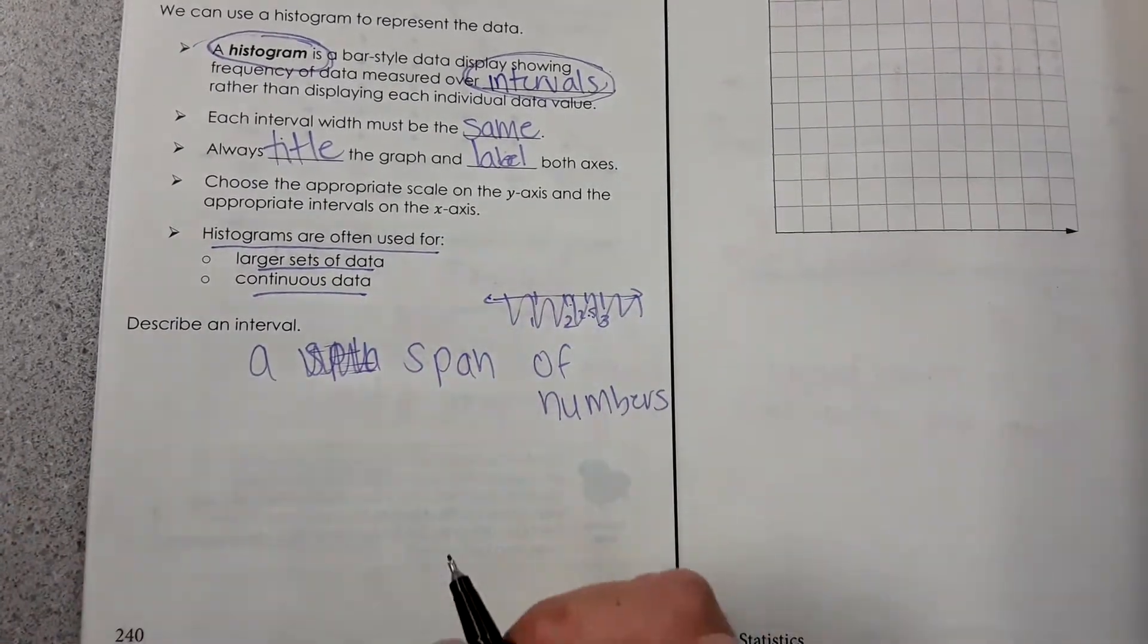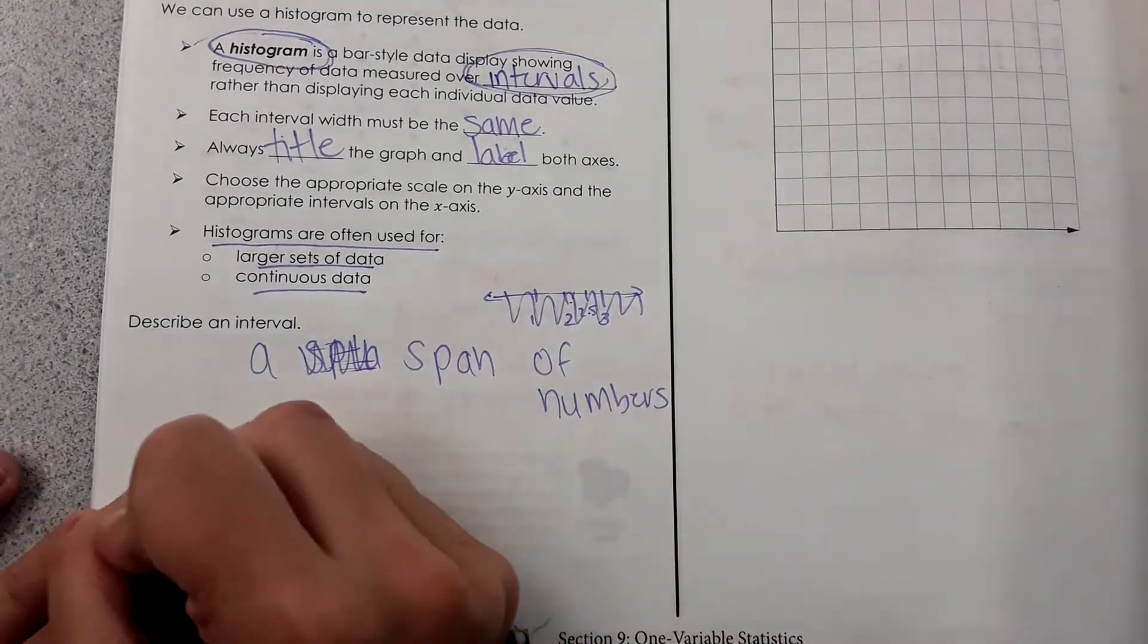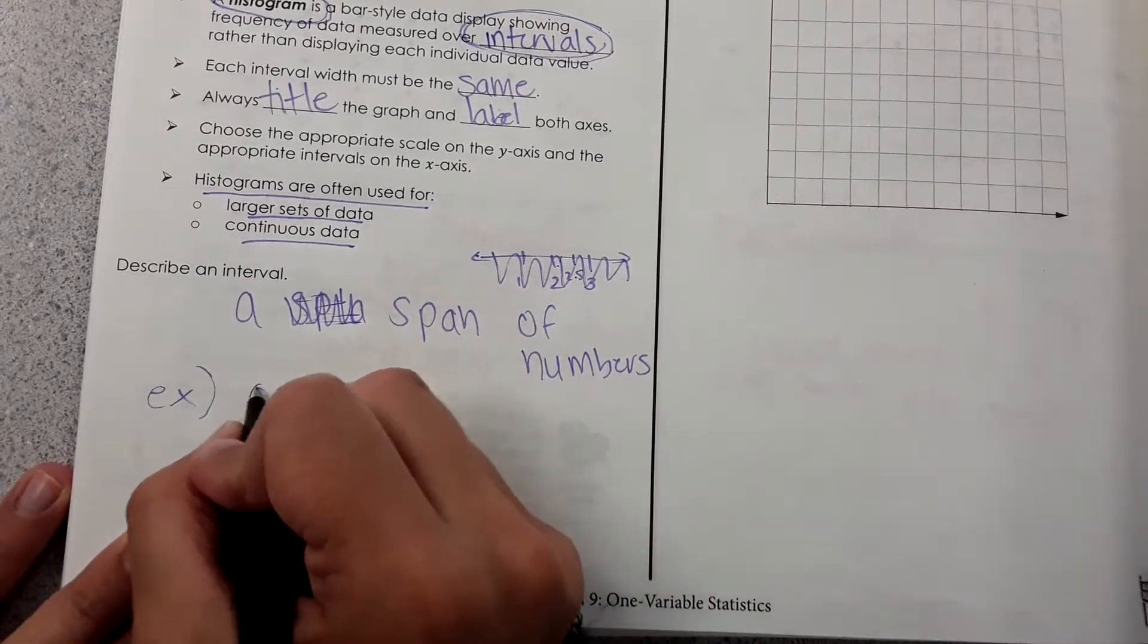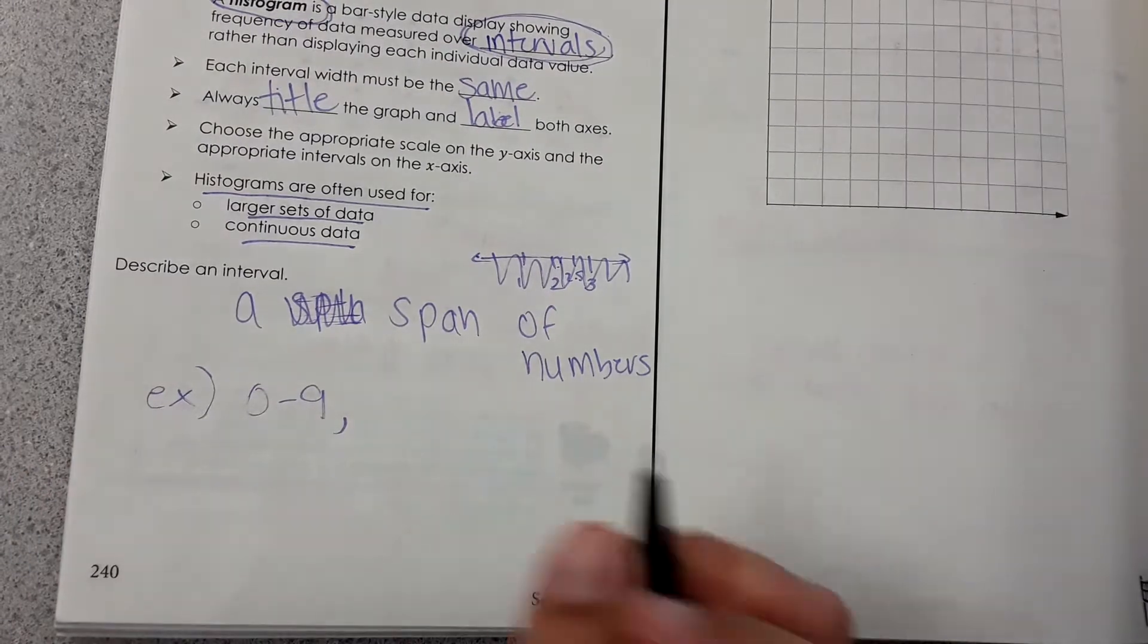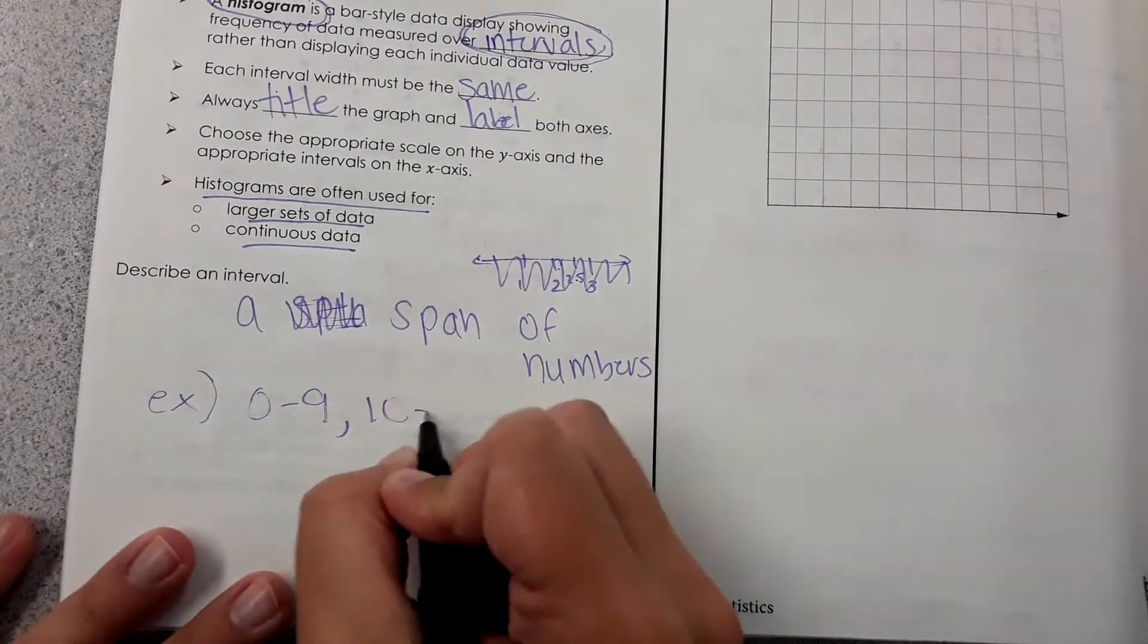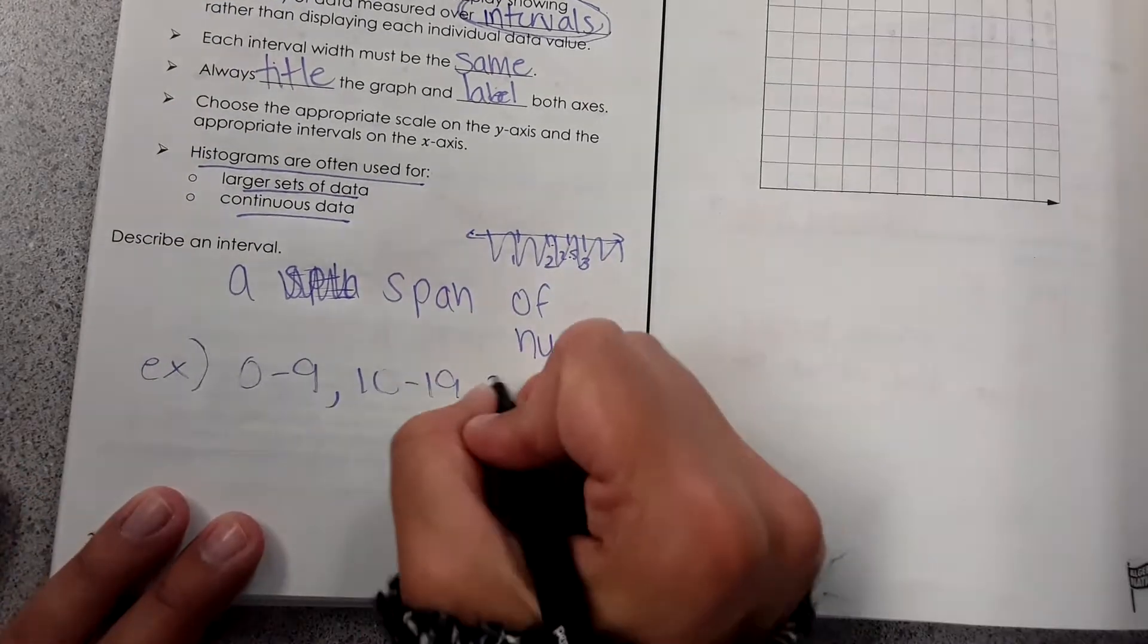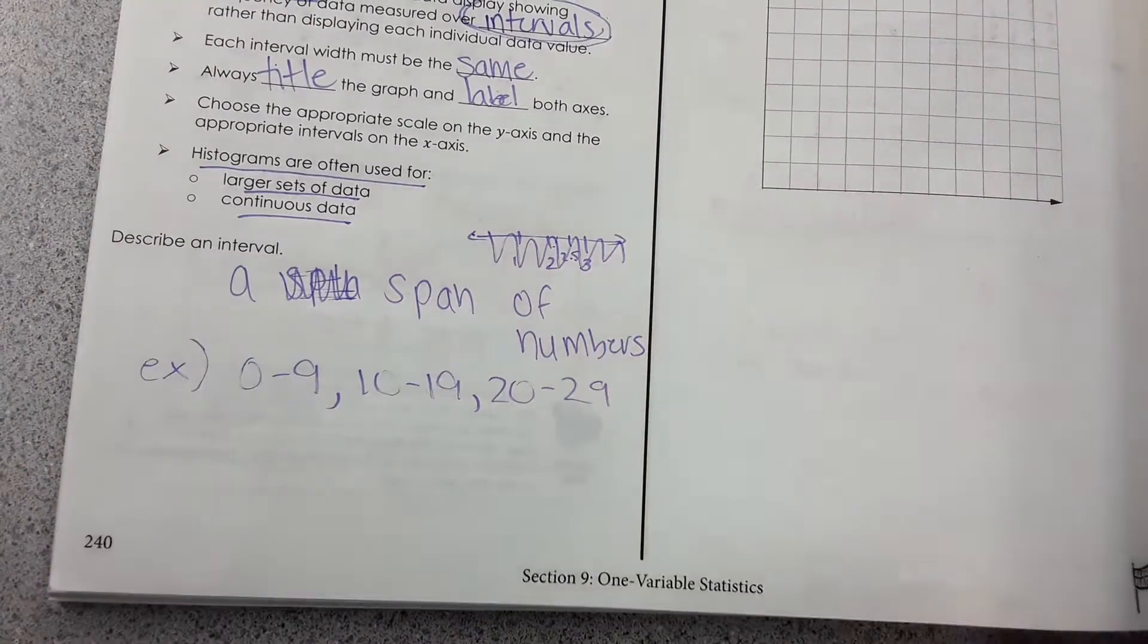For example, let's say you had numbers with a bunch of decimals. Instead of graphing the individual numbers, you would put everything between 0 and 9 in one column, then everything from 10 to 19 in another column, and it eliminates the issue of all the decimals. 20 to 29, 30 to 39, and these are intervals.